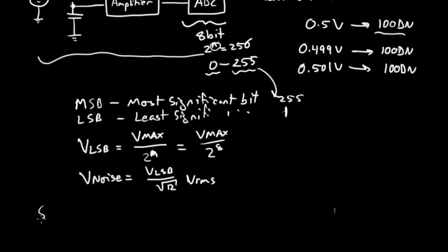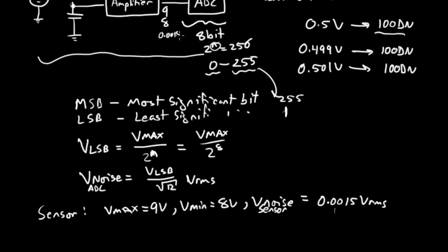Let's say we have a sensor with the following characteristics. The sensor has a Vmax equal to 9 volts, a Vmin equal to 8 volts, and noise voltage—that's sensor noise, the expected noise input referred at the sensor—equals 0.0015 volts RMS. So if we did not modify the above drawing in any way, the 9 volts, the 8 volts, and the 0.0015 volts would be coming out of the amplifier.